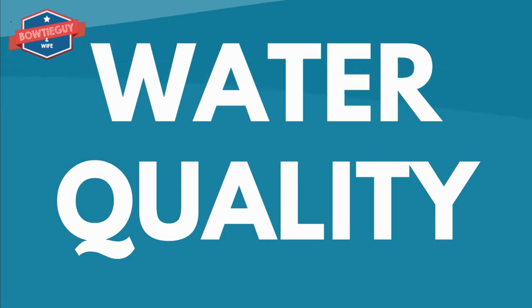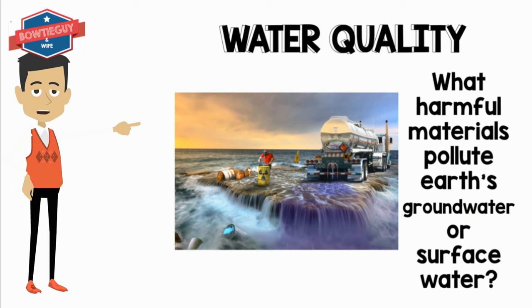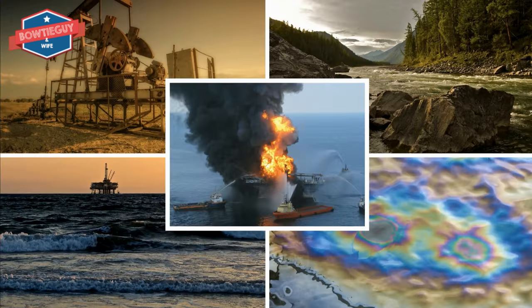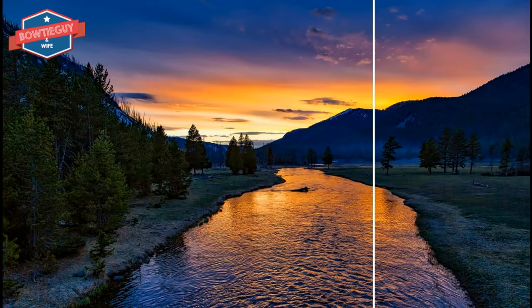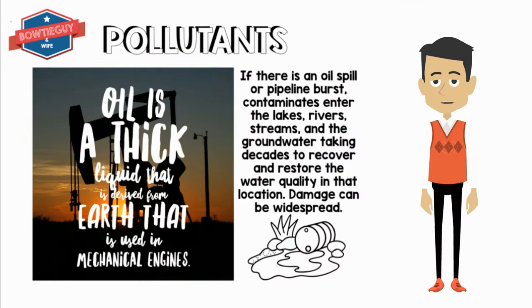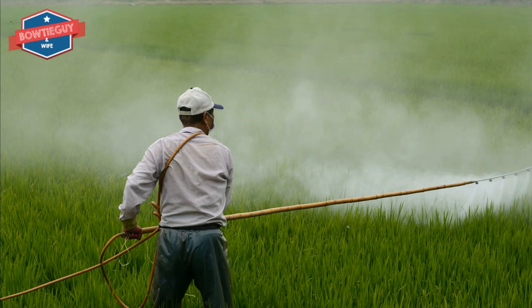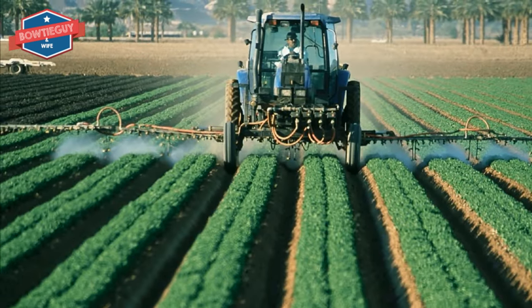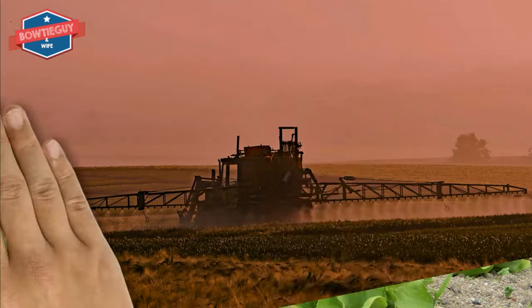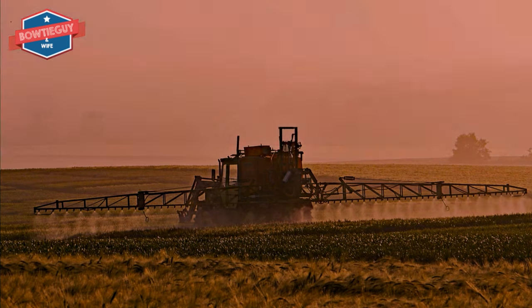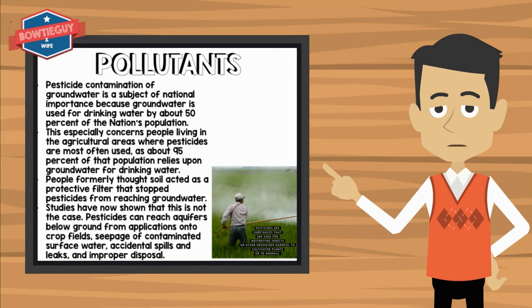Let's talk about water quality. What harmful materials pollute earth's groundwater or surface water? These are known as pollutants. If there is an oil spill or a pipeline burst, these are known as contaminants, and they enter the lakes, rivers, streams, and groundwater, taking decades to recover and restore the water quality in that location. Pesticide contamination of groundwater is a subject of national debate, and it's very important because groundwater is used for drinking water by about 50% of the nation's population. This especially concerns people living in agricultural areas where pesticides are most often used, as about 95% of that population relies upon groundwater for drinking water. People formerly thought soil acted as a protected filter that stopped pesticides from reaching groundwater, but studies have now shown that this is not the case. Pesticides can reach aquifers below ground from applications onto crop fields, leakage of contaminated surface water, accidental spills and leaks, and improper disposal.